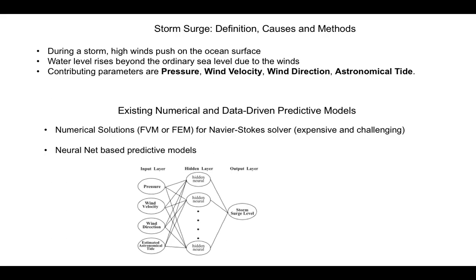This calls for predictive models that may be less challenging than a Navier-Stokes solver and previous literatures have gone through a neural net based predictive model where the input data are basically the contributing parameters and the recorded data of storm surge levels are my output classes.